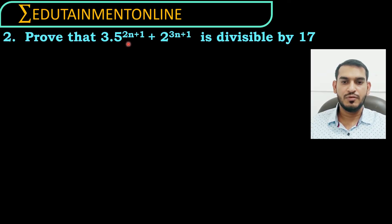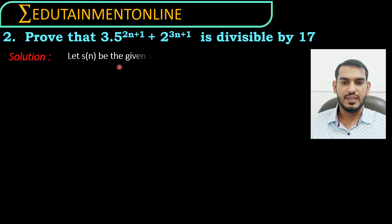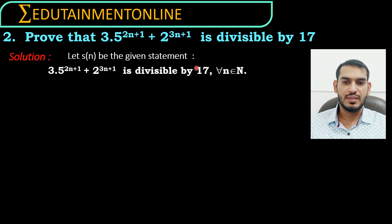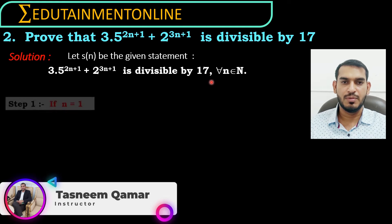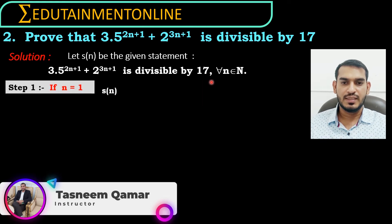Prove that 3 into 5 power 2n plus 1 plus 2 power 3n plus 1 is divisible by 17. Let s of n be the given statement, which is 3 into 5 power 2n plus 1 plus 2 power 3n plus 1 is divisible by 17.